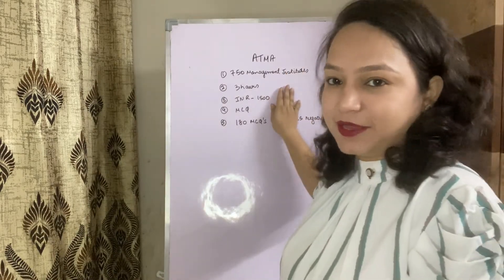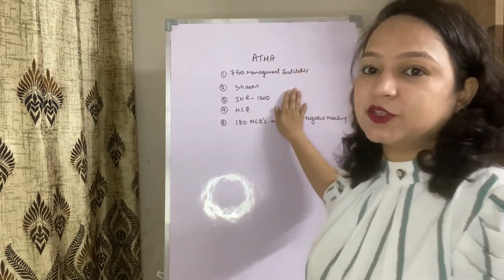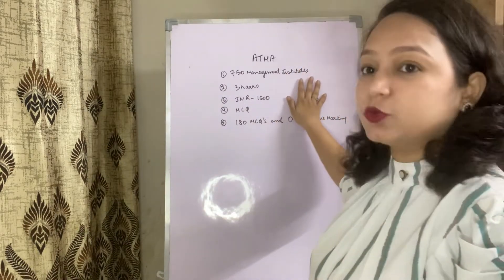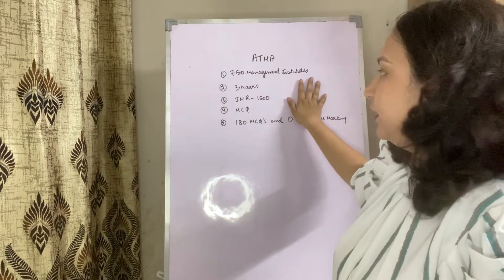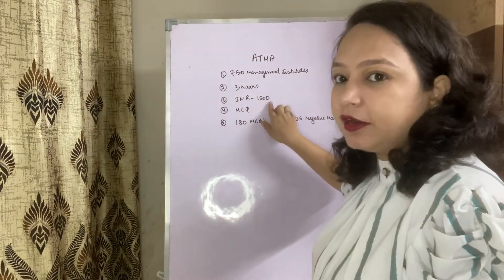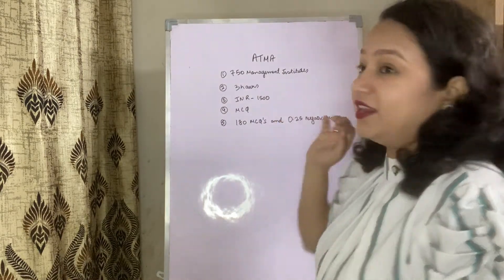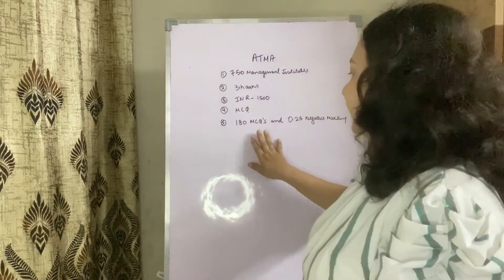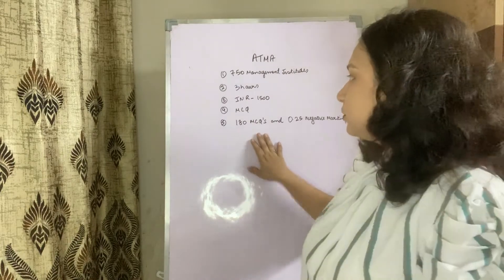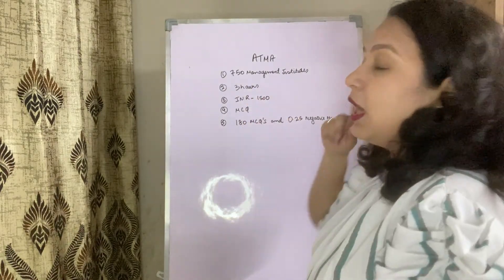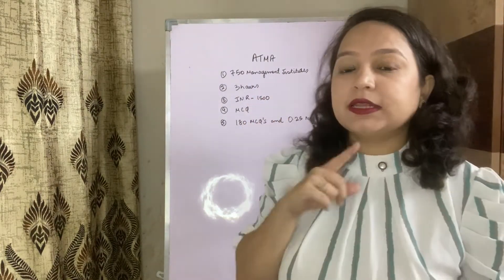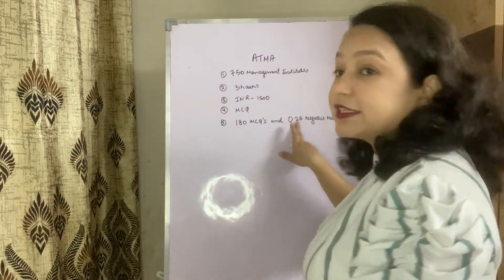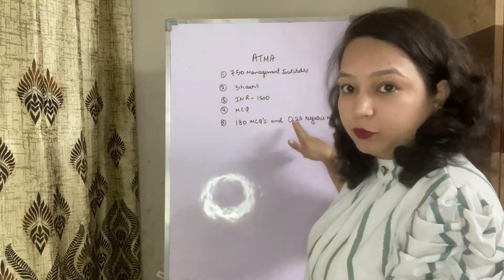The next exam is ATMA. It is accepted in 1750 institutes. The registration amount is 1100 rupees. The exam has 180 MCQs to be completed in 3 hours. You get 1 mark for a correct answer and there is a negative marking of 0.25 for a wrong answer.